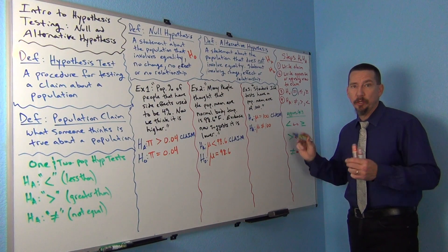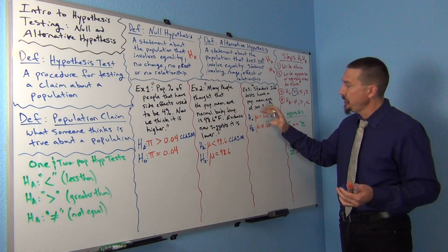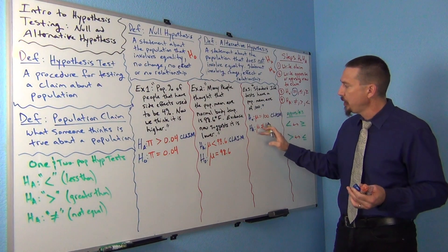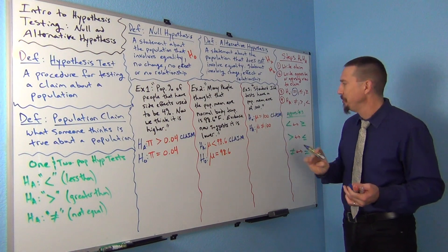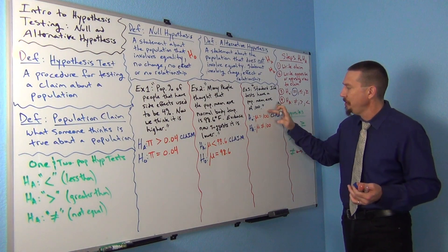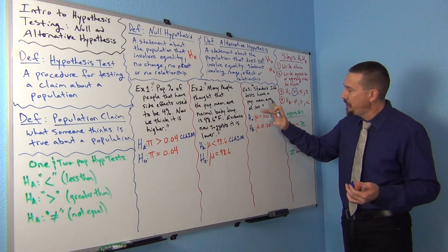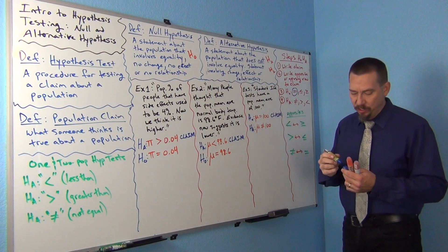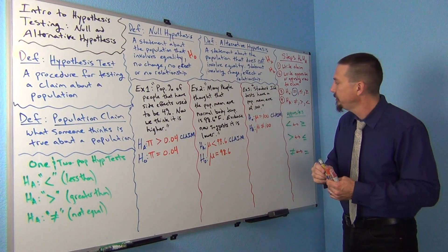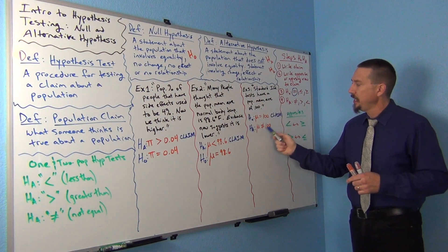It's actually not too bad once you get the steps. The main thing is: don't write H0 and HA on your paper first. Write your claim, write the opposite of the claim, then figure out what's the null and alternative hypothesis. It goes by the sign.